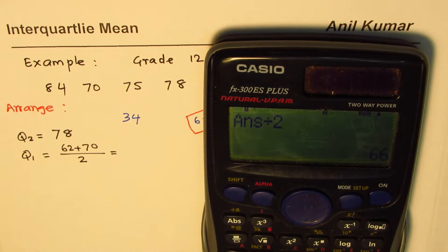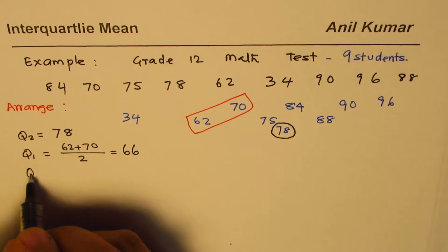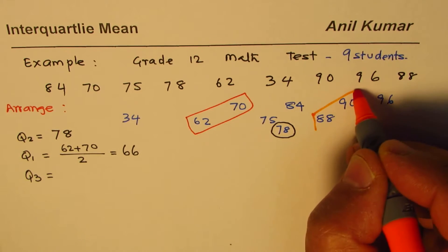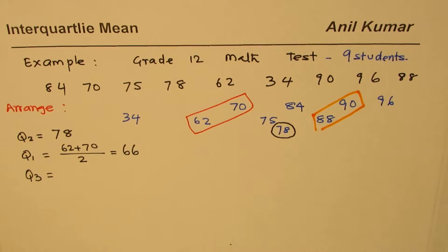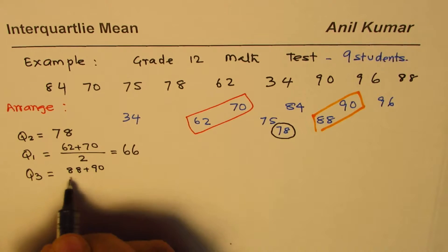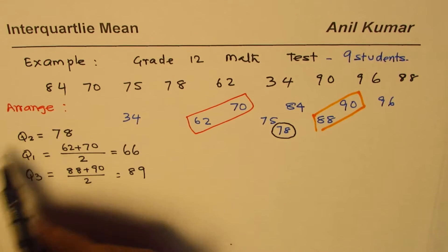And the third quartile is midway between the later half, so that gives us 88 plus 90 divided by 2. So the average is 89. So we get these three quartiles.